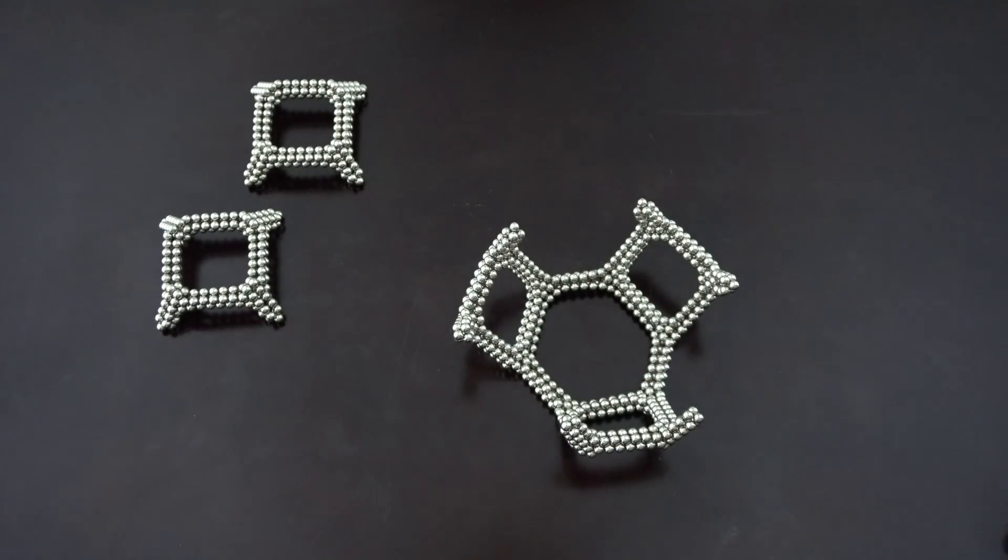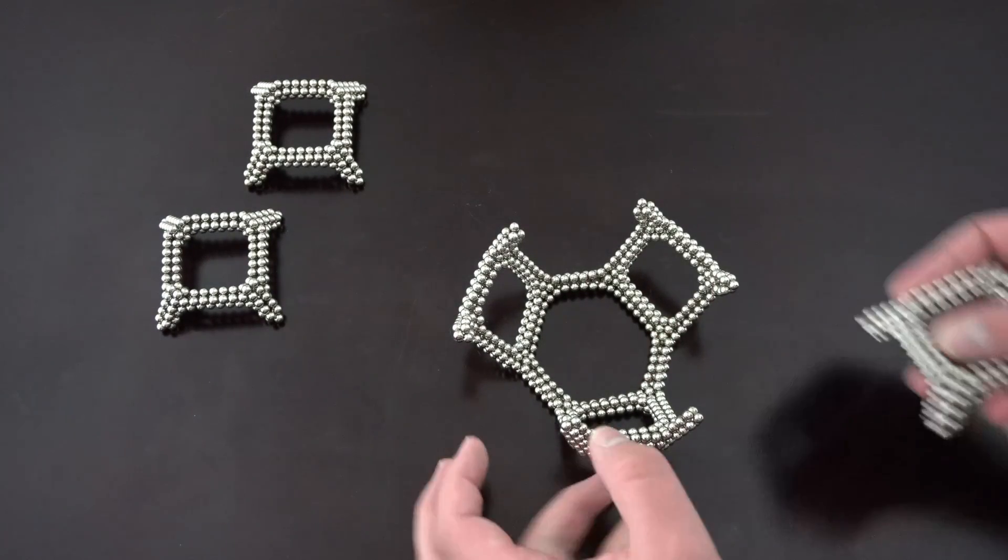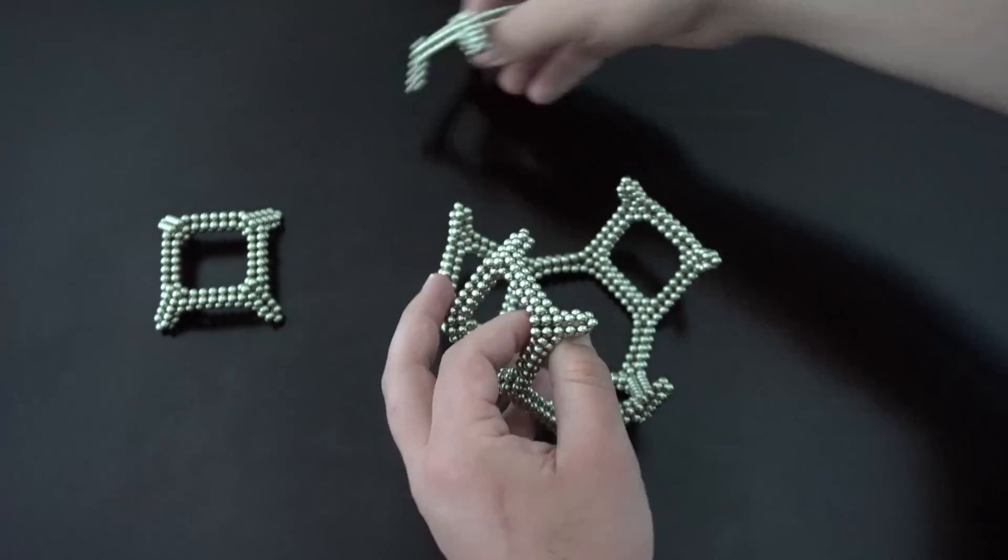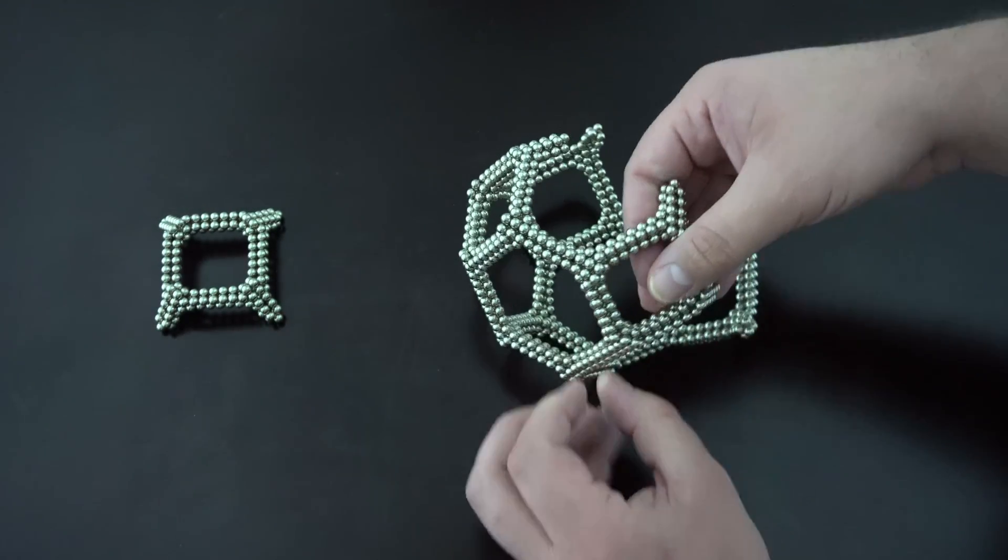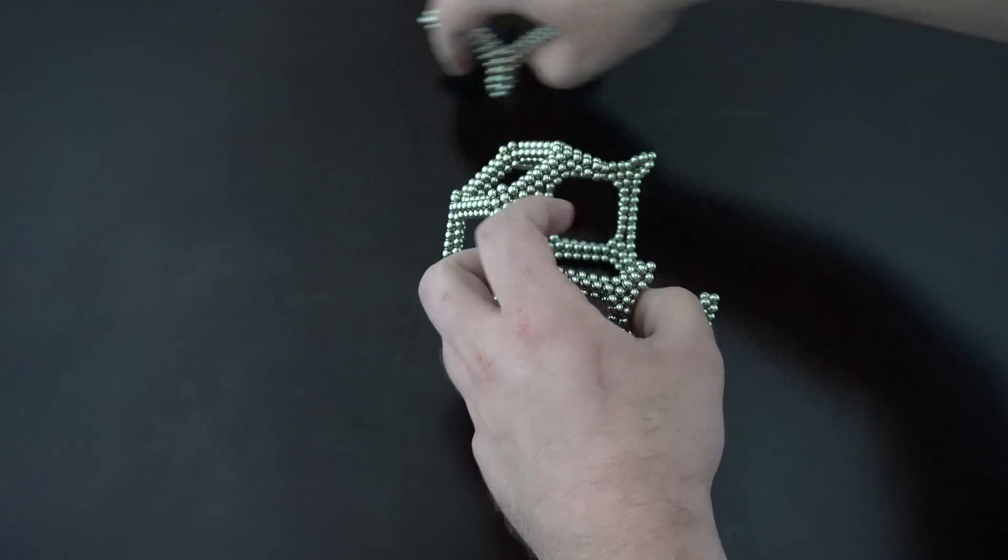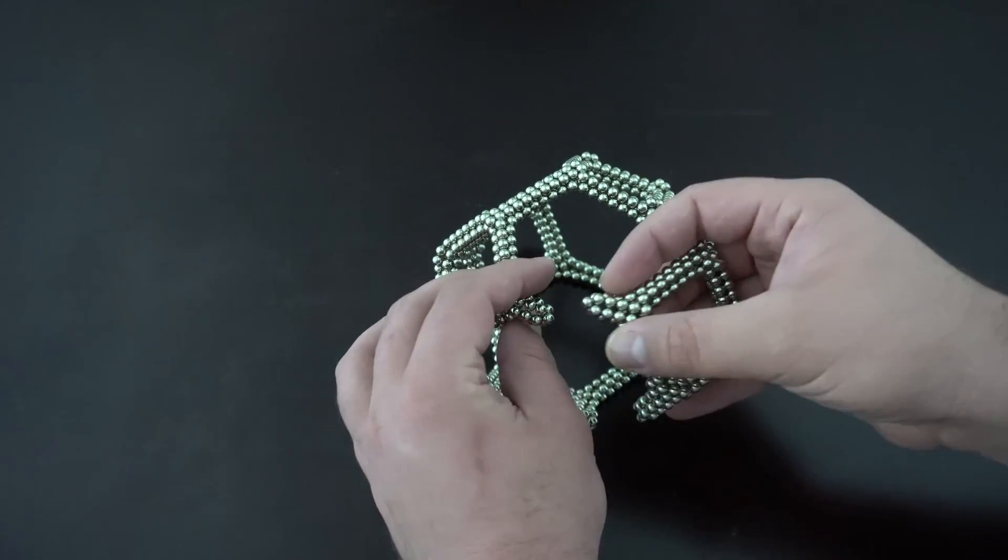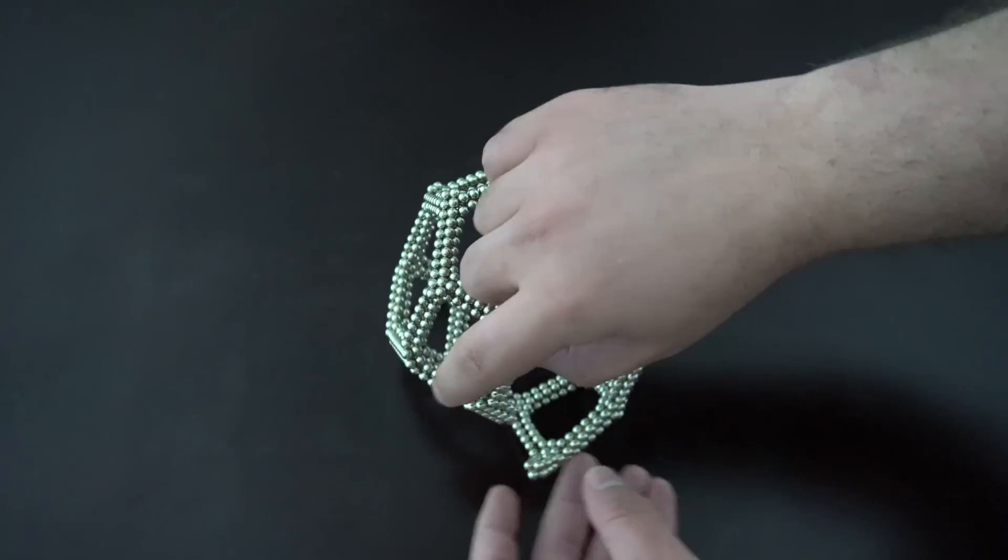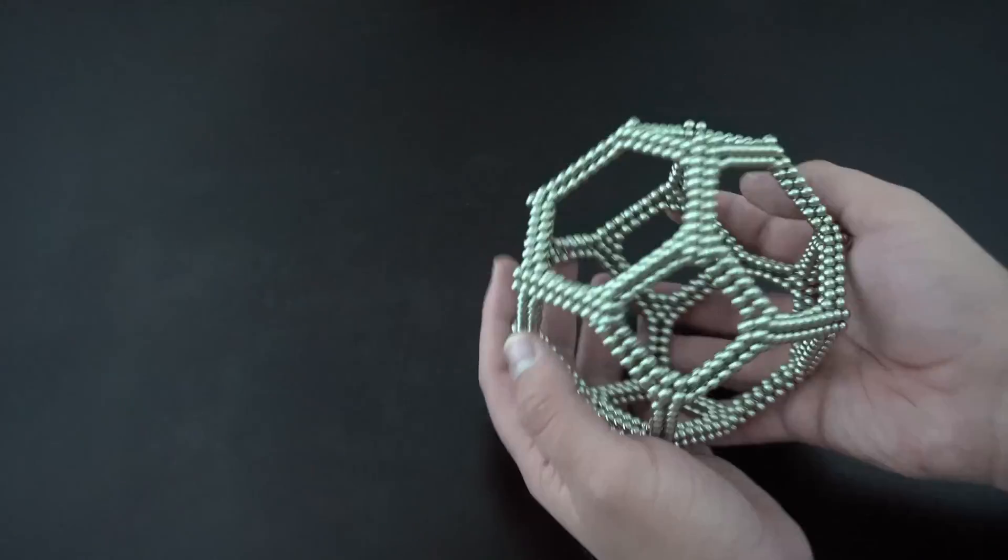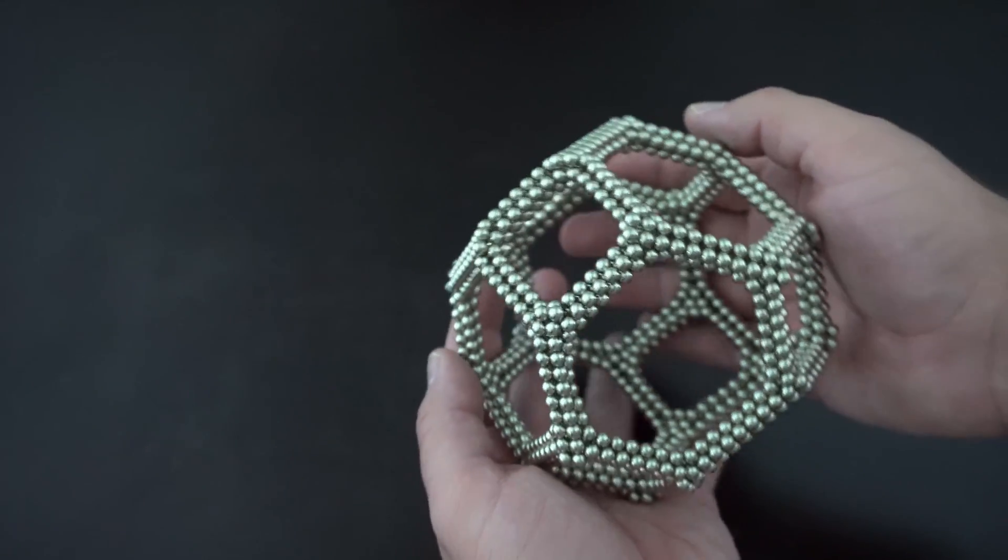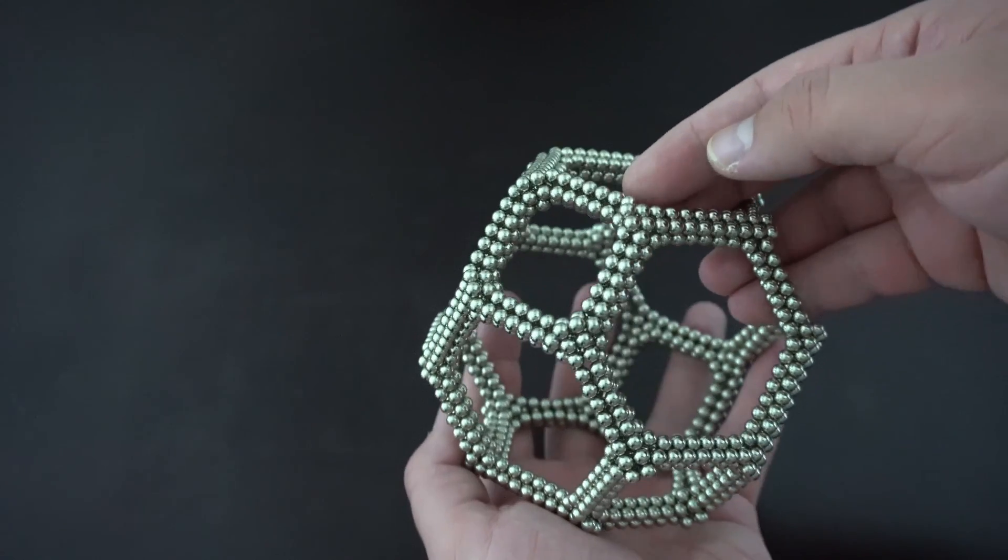And there you go. That is how you build a truncated octahedron.